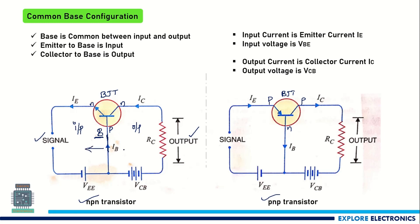This side I call it as the input side, and this side we call it as the output circuit. Here base is common. Similarly in the PNP circuit, this is also the base terminal, common between the input side and the output side. The emitter is the input terminal, so the current flowing in the input side is called the emitter current IE.